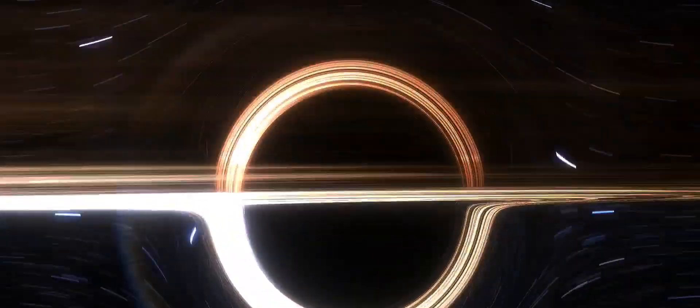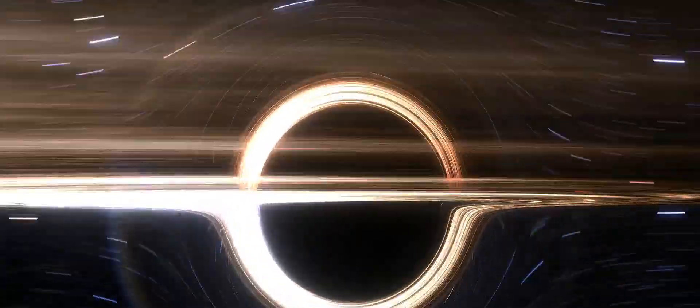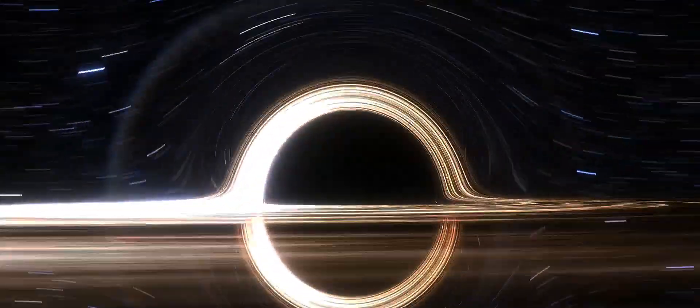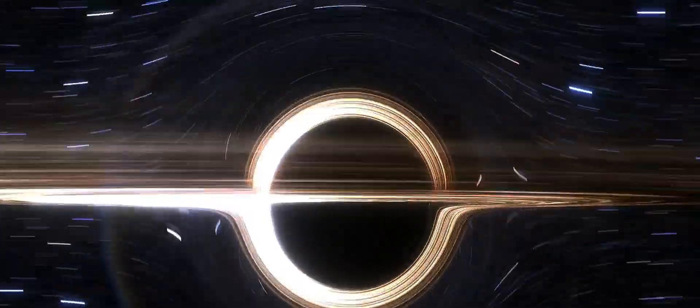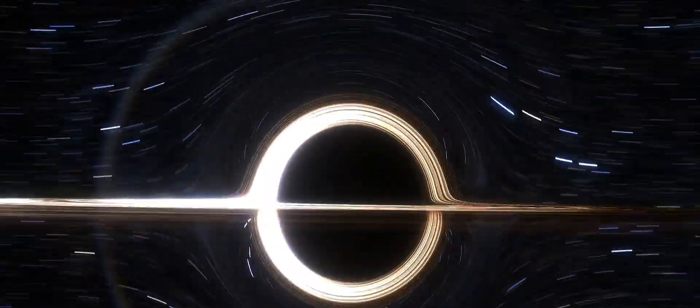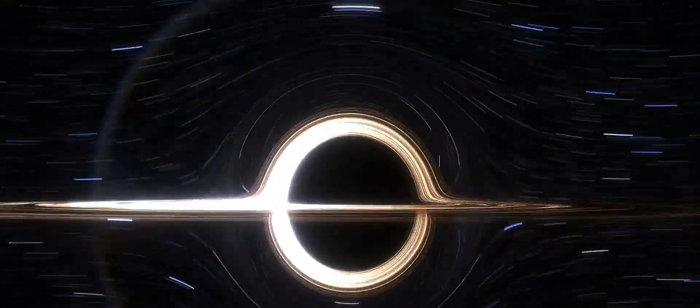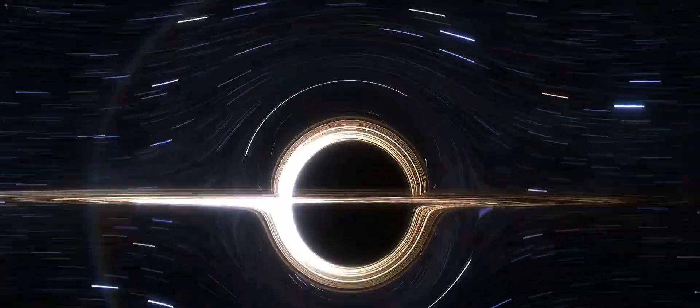Now imagine placing a heavy object on this fabric. The object would cause the fabric to bend or curve around it. This is the essence of general relativity. Einstein proposed that what we perceive as gravity is actually the curvature of space-time caused by mass and energy. The greater the mass of an object, the more it distorts space-time, creating what we experience as a gravitational pull.